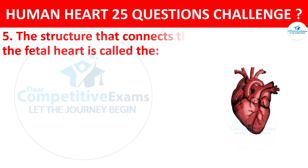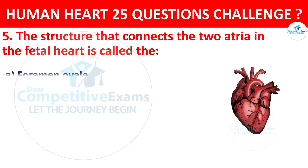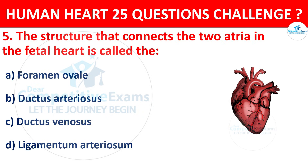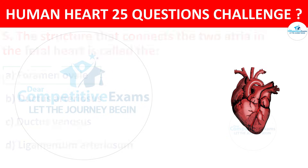Question number 5. The structure that connects the two atria in the fetal heart is called? Options: Foramen ovale, Ductus arteriosus, Ductus venosus, or Ligamentum arteriosum. The correct answer is A, that is Foramen ovale.